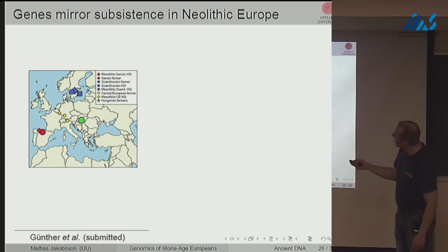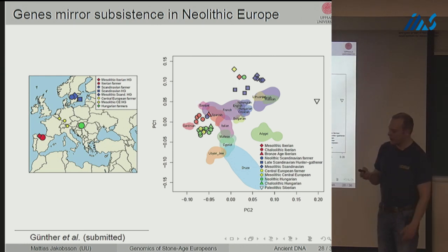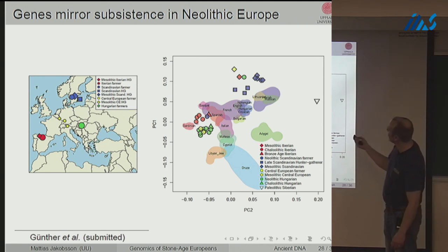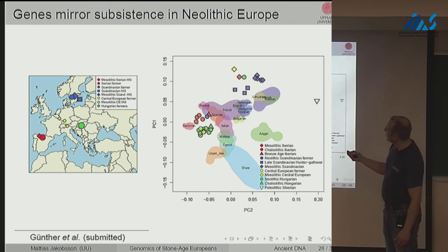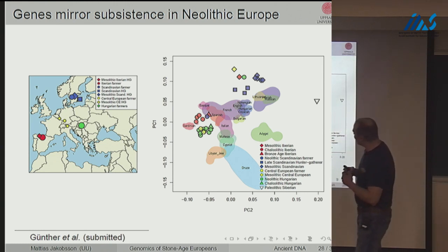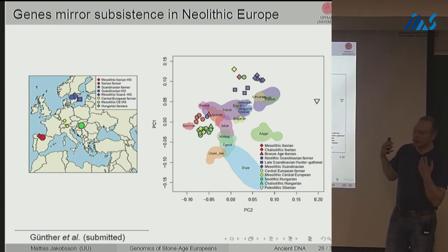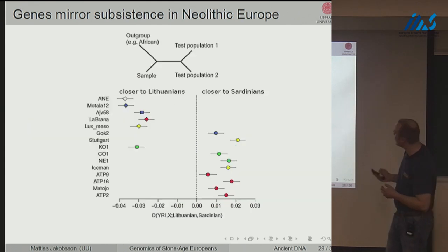The take-home message from the broader European overview is that individuals from a hunting-and-gathering context, regardless of where in Europe they were sampled, genetically cluster together at one end of the variation space. Individuals from a farming context largely cluster together with modern people from southern Europe. This trend is not unique to Scandinavia or any particular part of Europe — it appears consistent all across Europe.